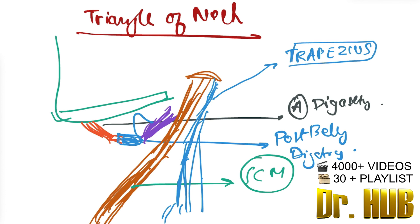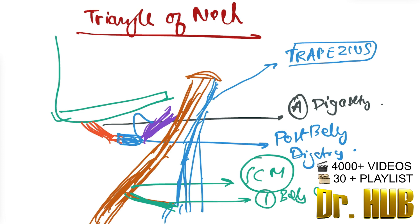The advantage of labeling a diagram as soon as it is done is because you won't be forgetting to label it. This is the trapezius, and inferiorly at the bottom there is the inferior belly of the omohyoid. Let's change the color — this is the inferior belly of the omohyoid.